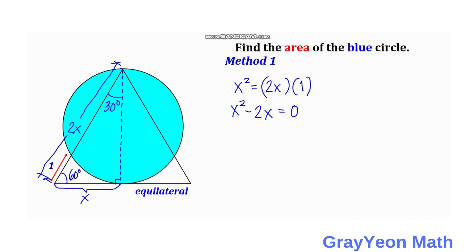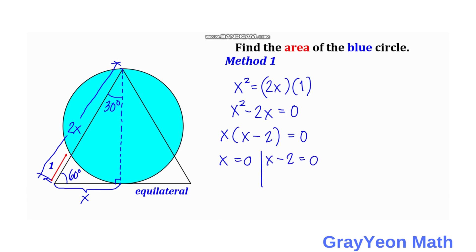So we have x times (x minus 2) is equal to 0. We have two solutions: x is equal to 0, and x minus 2 is equal to 0. Since the first solution gives x = 0, it is invalid since there is no zero distance, so x is equal to 2.